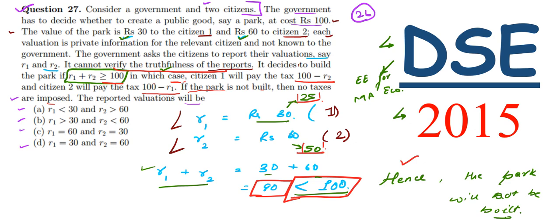But if they give higher values - assume R1 is converted to 40 or R2 is converted to 70, then R1 plus R2 will reach 100 and it is possible to make the park. But the citizens won't increase their amount because they won't want to give higher tax just for making the park. The question never says that either citizen wanted the park to be created, so they won't want to give extra tax.